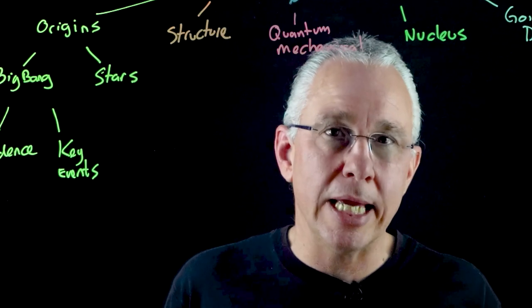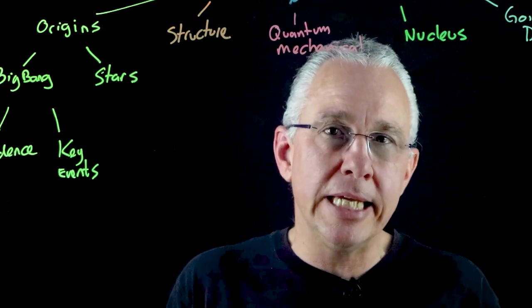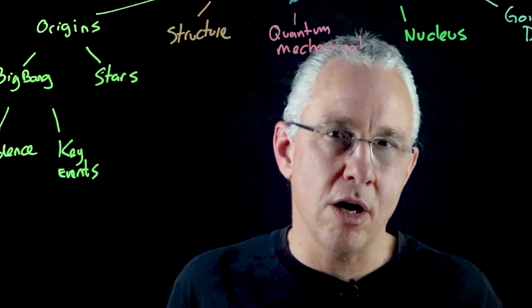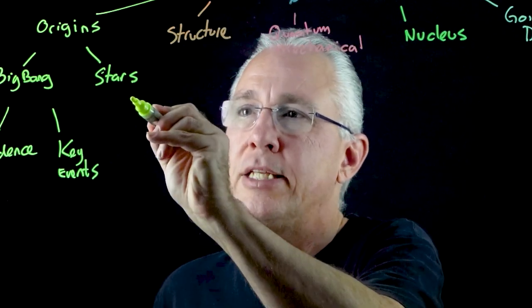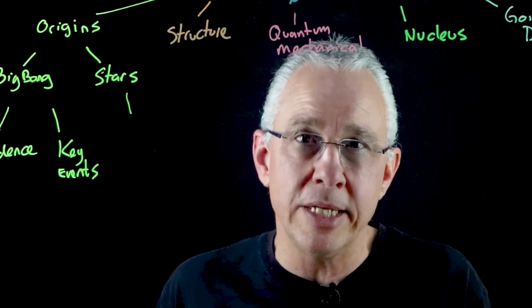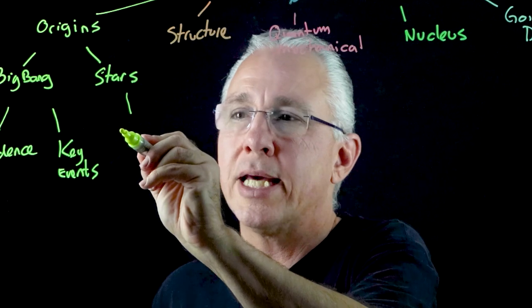Our next area is looking at stars, and there are three key areas. Again, the progression is of understanding our origins of our elements. So, the first thing you need to know is the fact that we can measure stars, and we cover this already in Module 7, which is looking at spectral analysis.